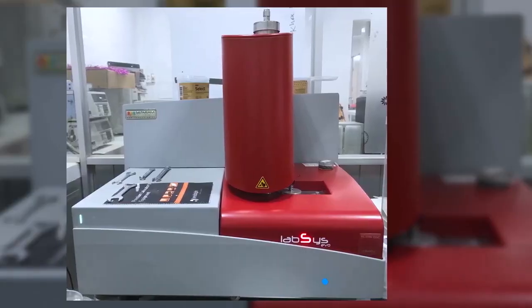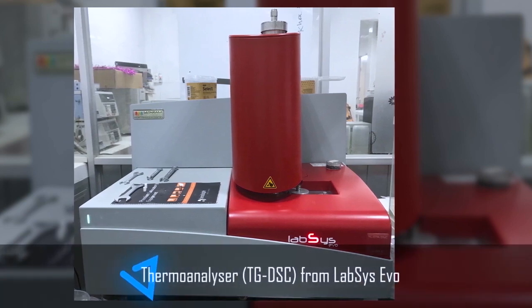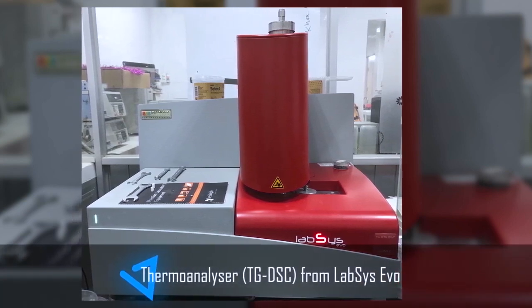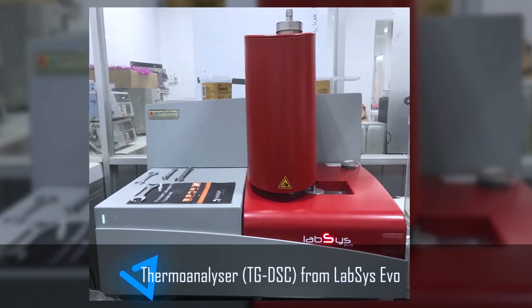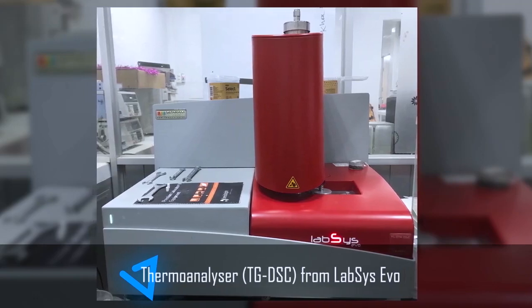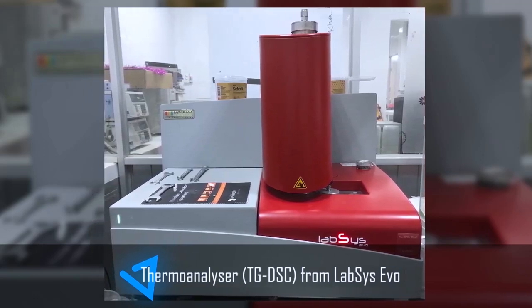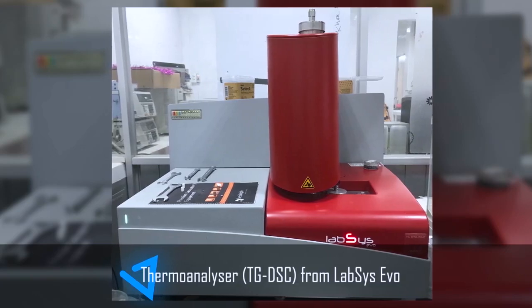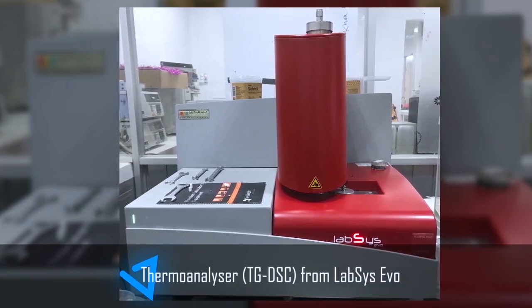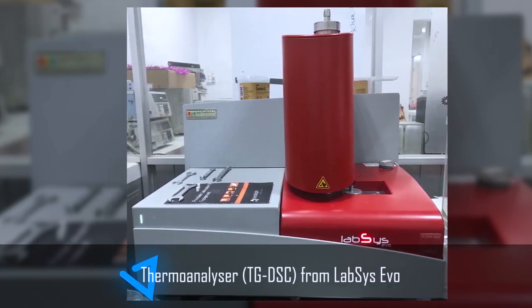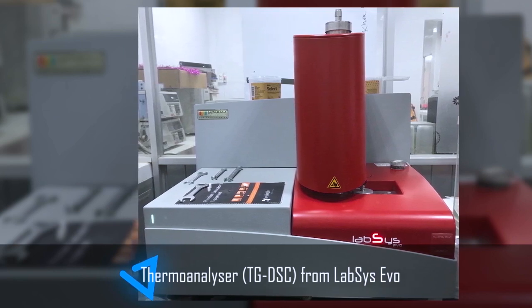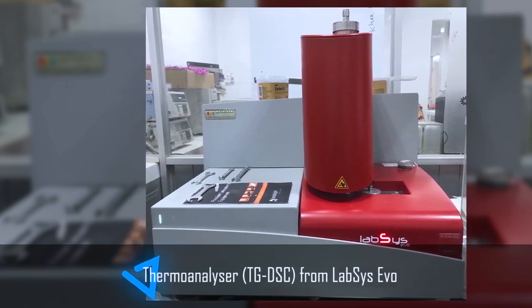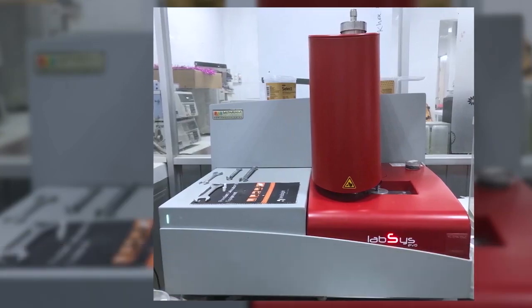Thermal Analyzer TG-DSC is a specialized instrument used for basic scientific research and material science. It is utilized for determining changes in phase properties of samples. Especially, it allows determining essential parameters such as thermal stability and heat flow of materials.